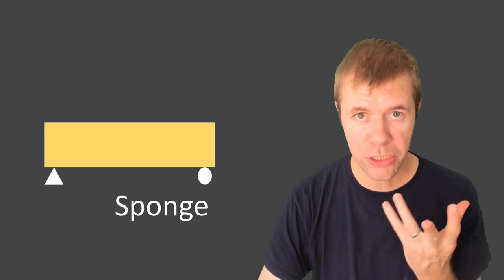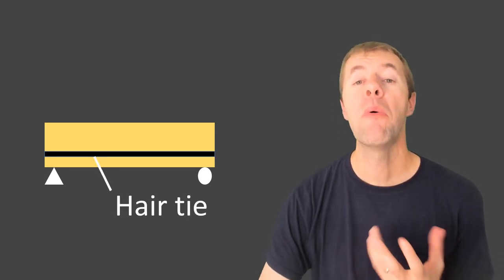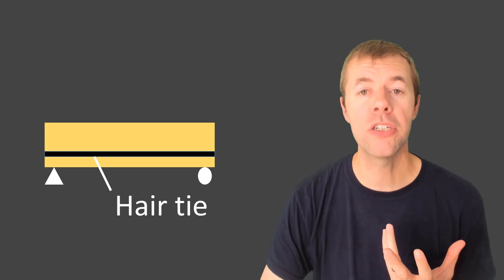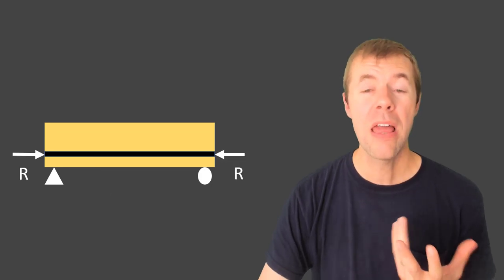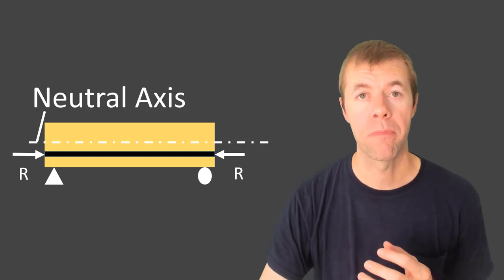Well, we had our sponge. We took our hair tie. Thanks, Jess. Appreciate that. We put it on the sponge and squeezed it together. And it caused a load, kind of like an internal stressing. Now, that load was placed below the neutral axis.